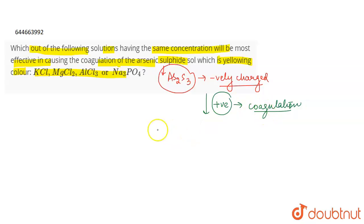So if we talk about the Hardy-Schulze rule, according to this rule, the valency, greater is the valency, greater is the coagulating power of the ion which is going to cause the coagulation.